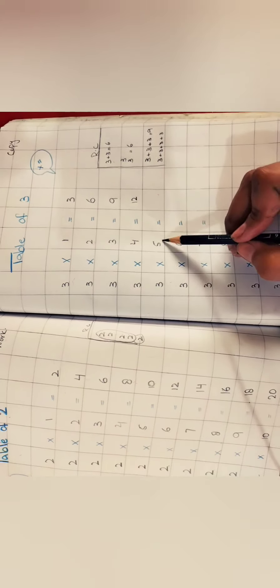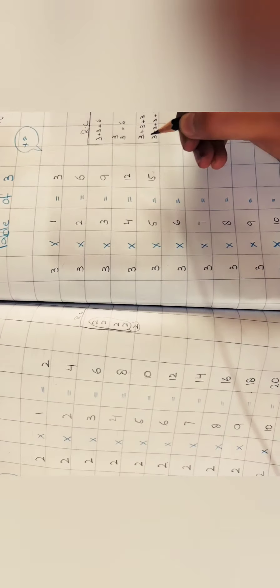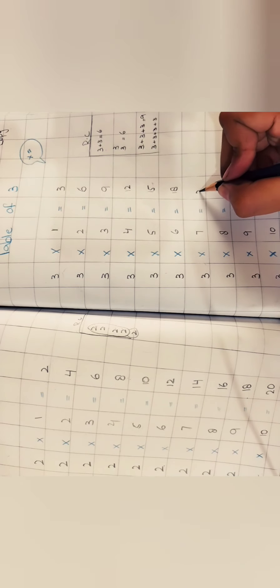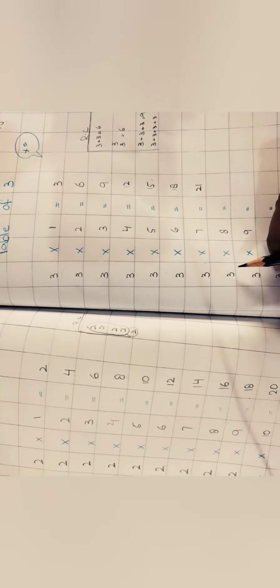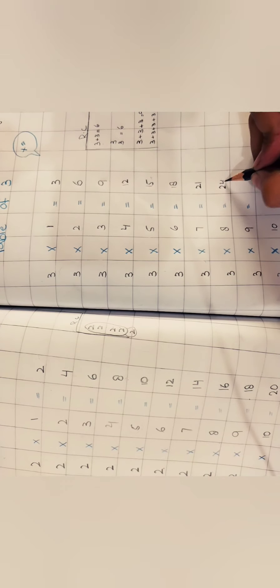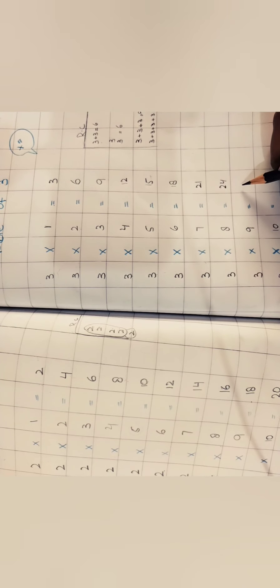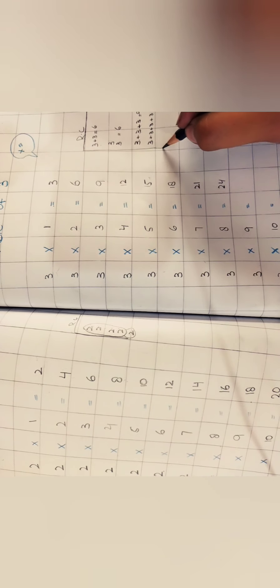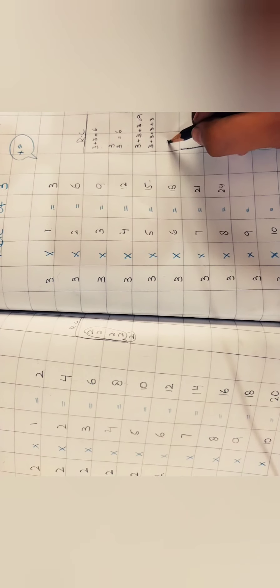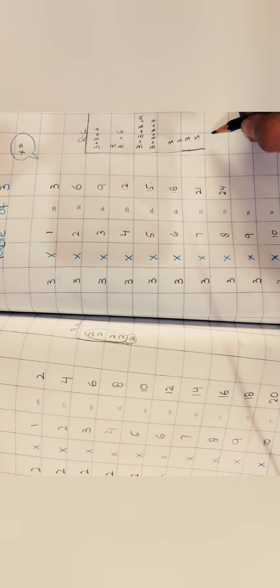Three sevens are twenty-one, three eights are twenty-four, three nines — what will three nines be? You have to add three nine times. So let me show you: writing three nine times — one, two, three, four, five, six, seven — and two more times we need to write, making nine threes total.